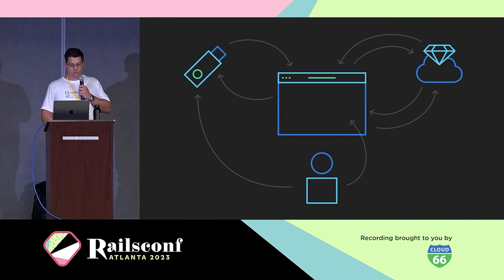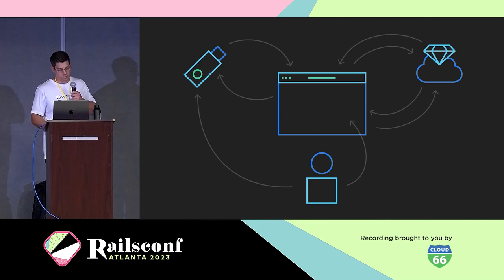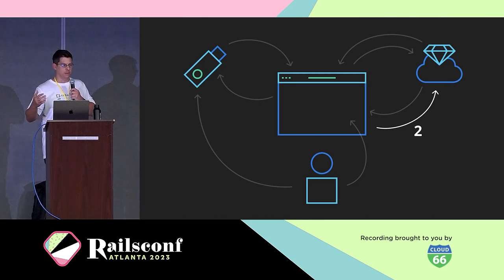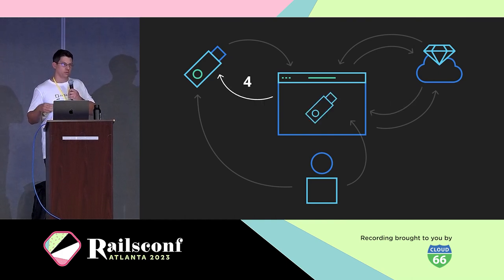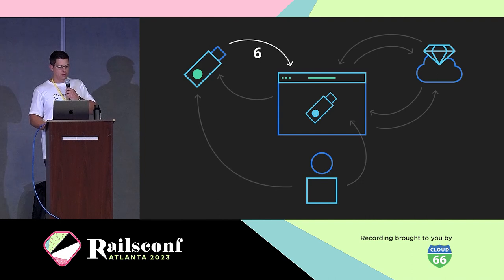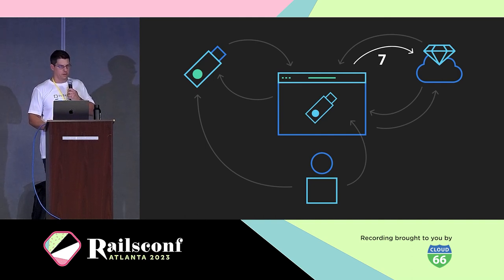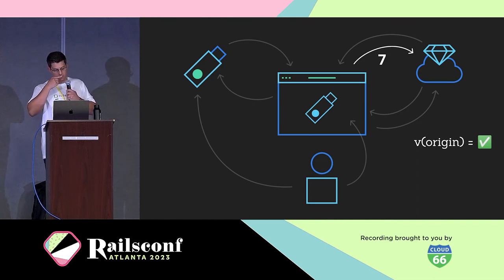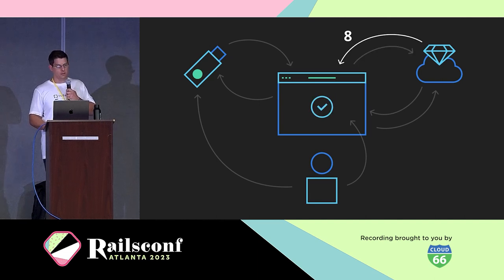Authentication looks pretty similar, with the difference that we now have the public key stored in our server for that user. The user signals they want to authenticate; the browser asks the server for options including the allowed credentials for that user; the browser calls the WebAuthn API and passes everything to the authenticator; the authenticator asks for user authorization, creates a new signature, and sends the payload back through the browser to the server; the server validates the signature, origin, and domain — and if everything is successful, the user is authenticated.